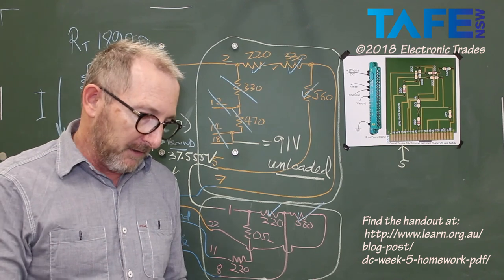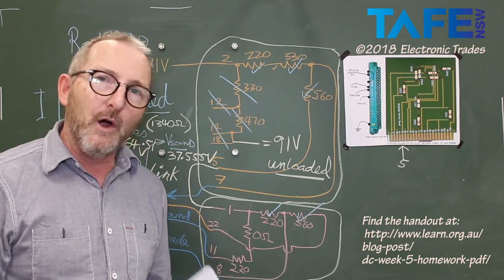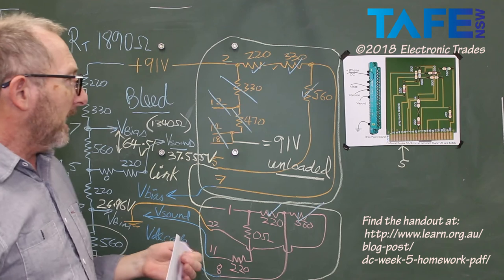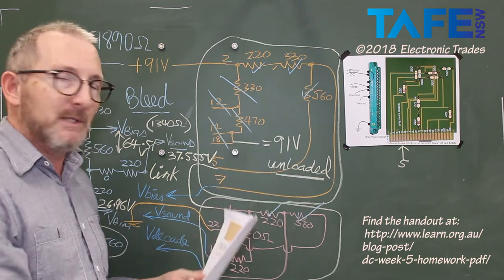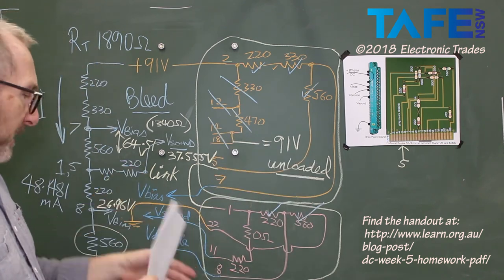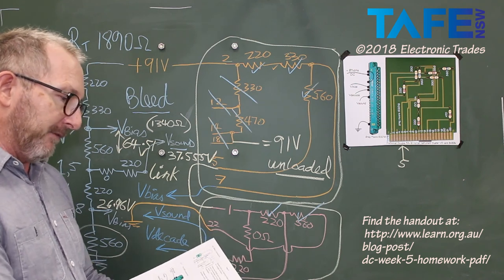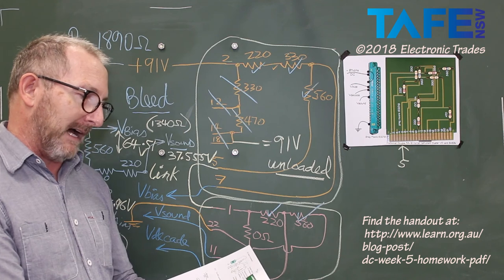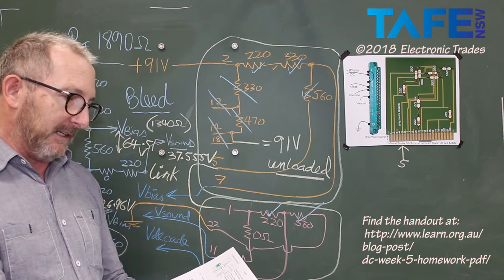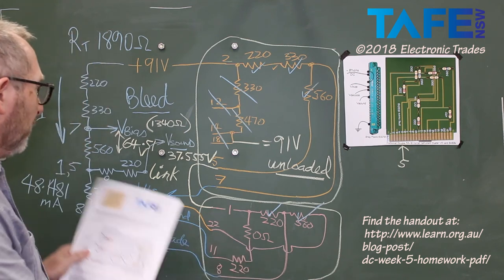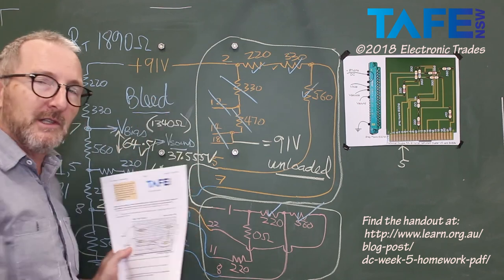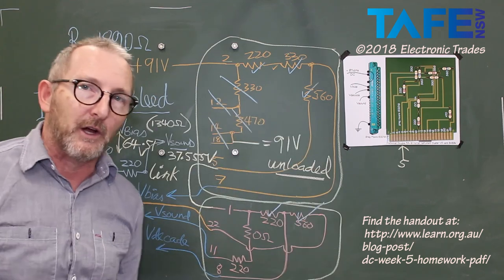All of those voltages are unloaded. The minute that we add loads to those points, and in the paper it explains what you have to do, I think it says here you've got 12k resistance from V-bias to ground, 6.8k from V-decade to ground, etc. You have to put all of those load resistances in and then there's going to be a stack of calculations to do.